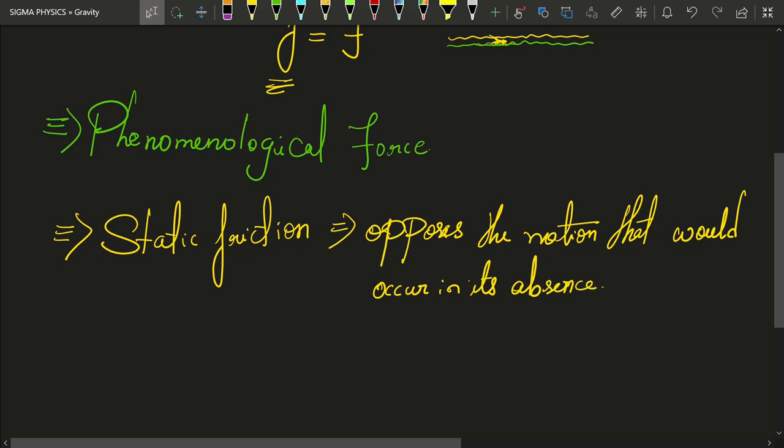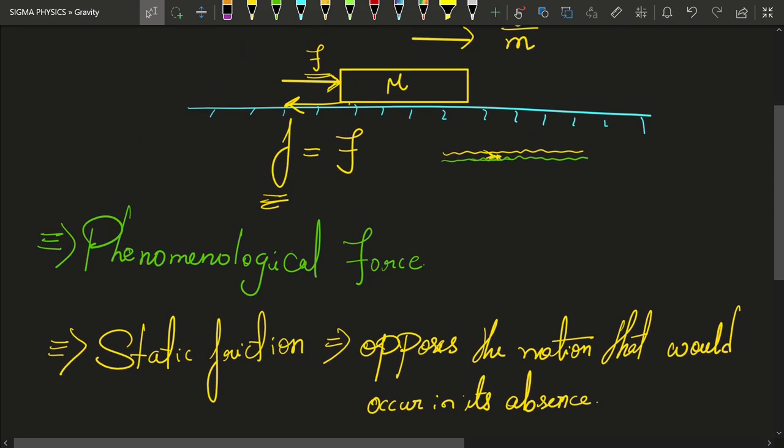Which means that if this force of friction did not exist, then the body would move. So, in the absence, static friction opposes that motion which would occur in its absence.